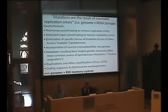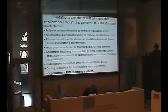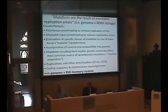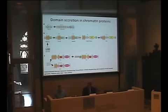The duplications and other amplifications that Susumu Ohno told us in 1970 were going to be so essential to evolution are, again, not spontaneous accidental events but require the coordinated action of multiple biochemical players, and these can be stimulated by things like P-factors in Drosophila. We know that coding sequence and chromosome rearrangements of many different kinds have been important in evolution — this is why I like to say the genome is a read-write memory. One of the most important examples is domain swapping and domain accretion in protein evolution.